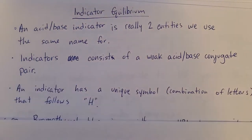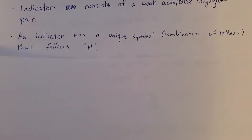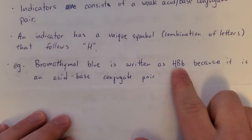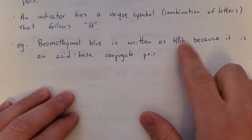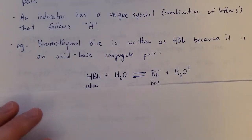An indicator has a symbol, which is usually a combination of two letters with H in front of it. Sounds confusing, but I'll show you why. So bromethymol blue looks like this. You write it as HBB, BB for bromethymol blue, H because it's actually a weak acid.